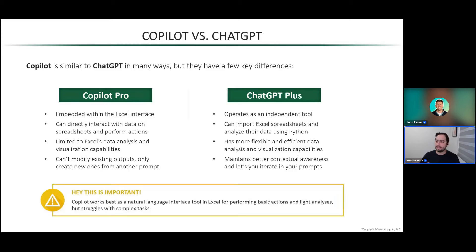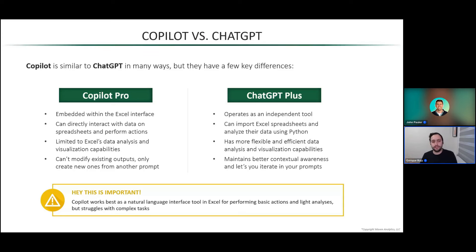Copilot works best as a natural language interface tool in Excel for performing basic actions and light analyses. Sometimes you know Excel is capable of something, but you don't know which menu to click, which button to use, or which formula to write — that's where you can use natural language to prompt Copilot. But if you want to perform more complex analyses or do something in multiple steps, Copilot is going to struggle a little bit more with those tasks.